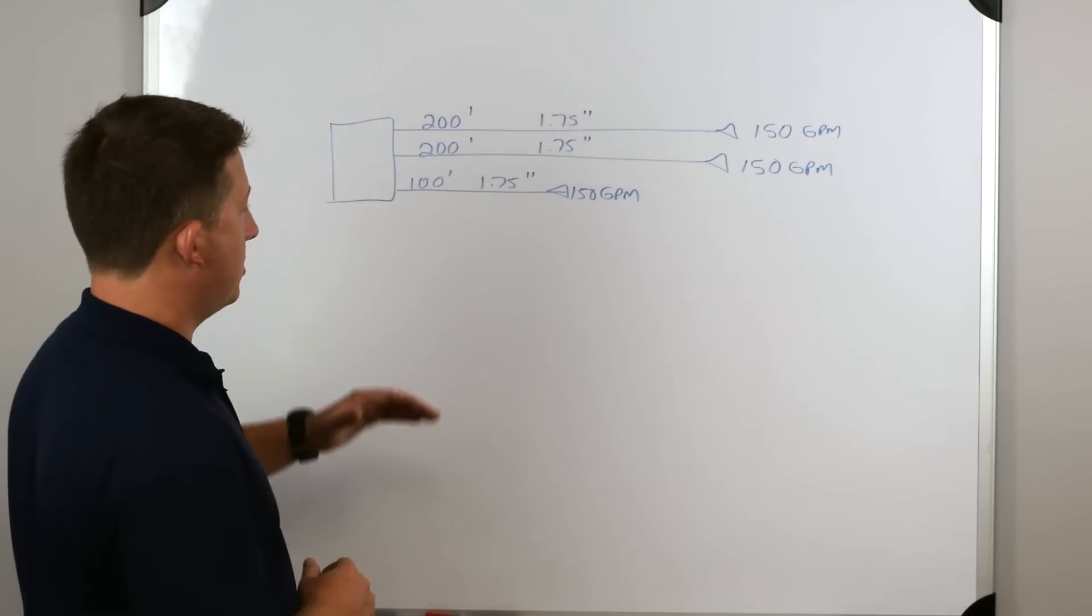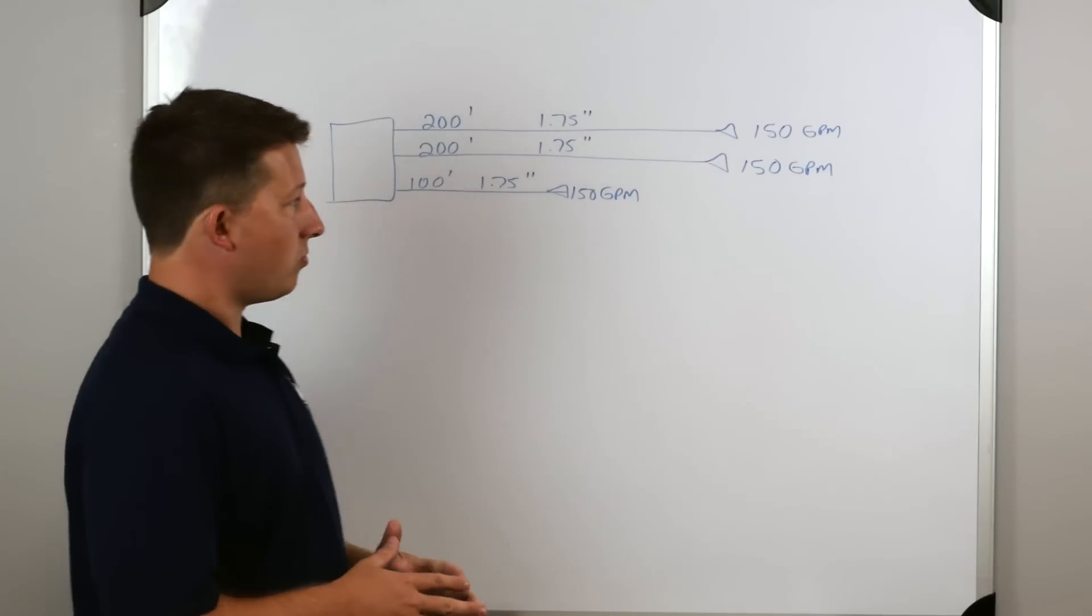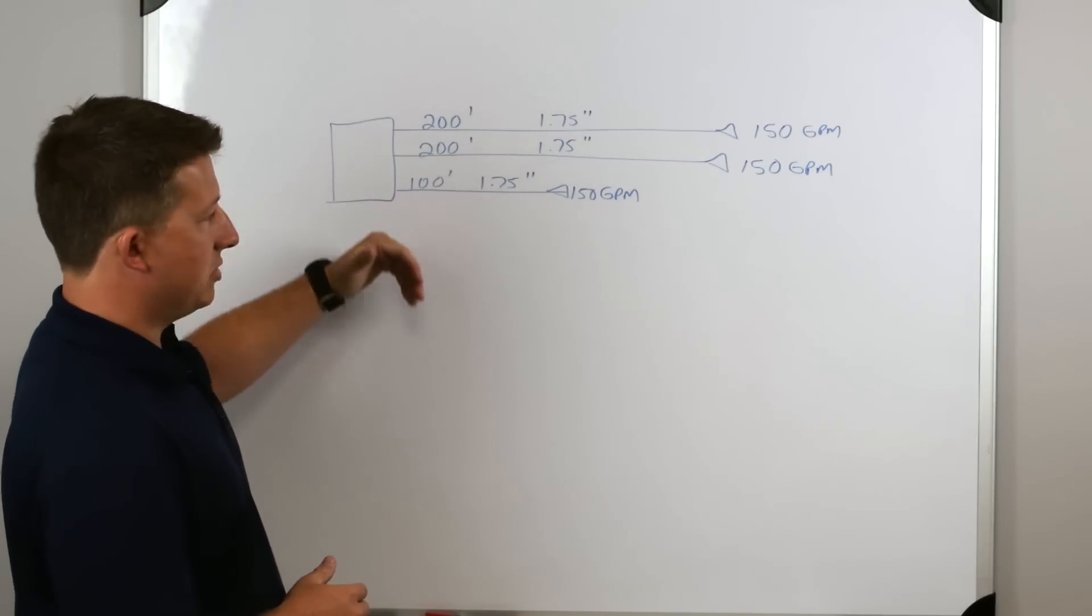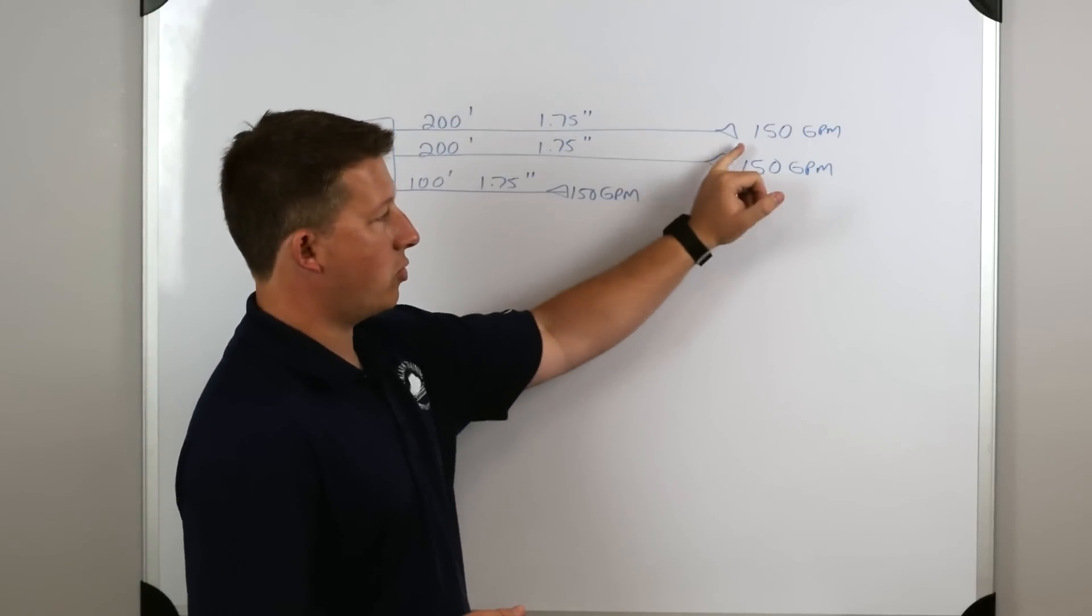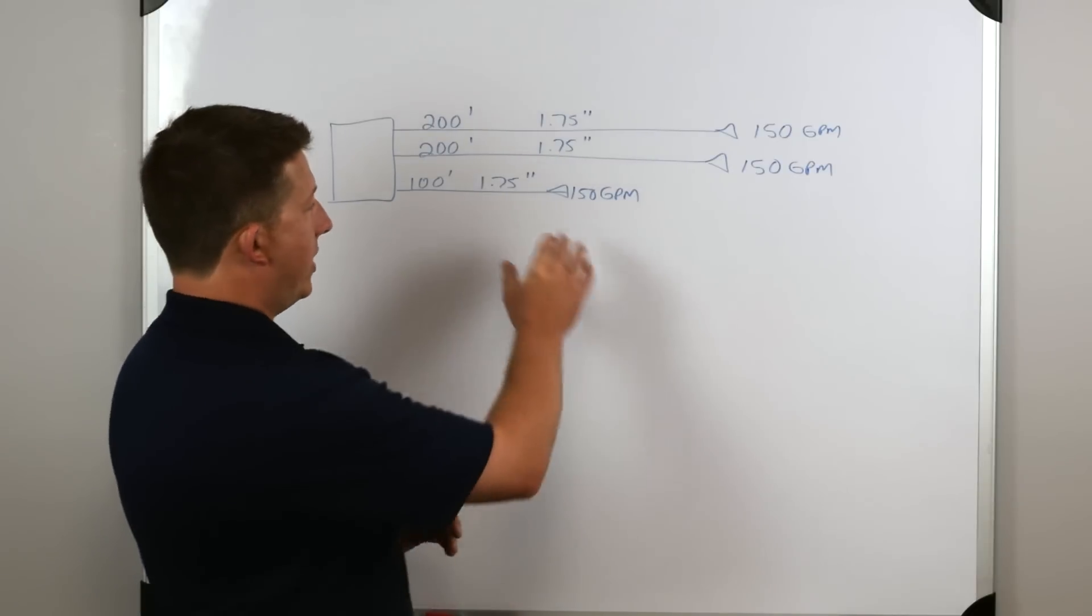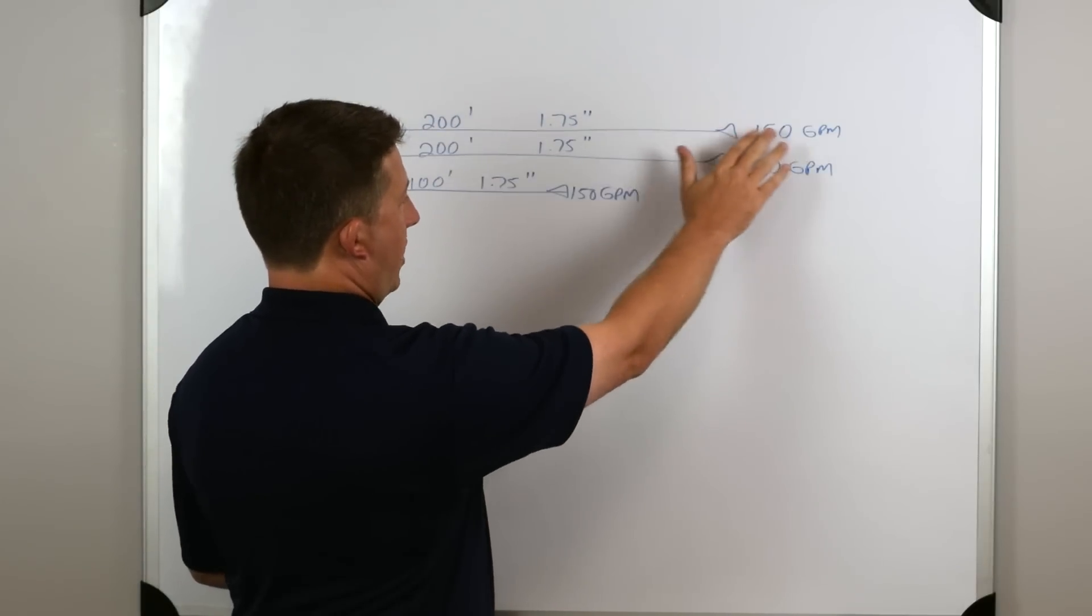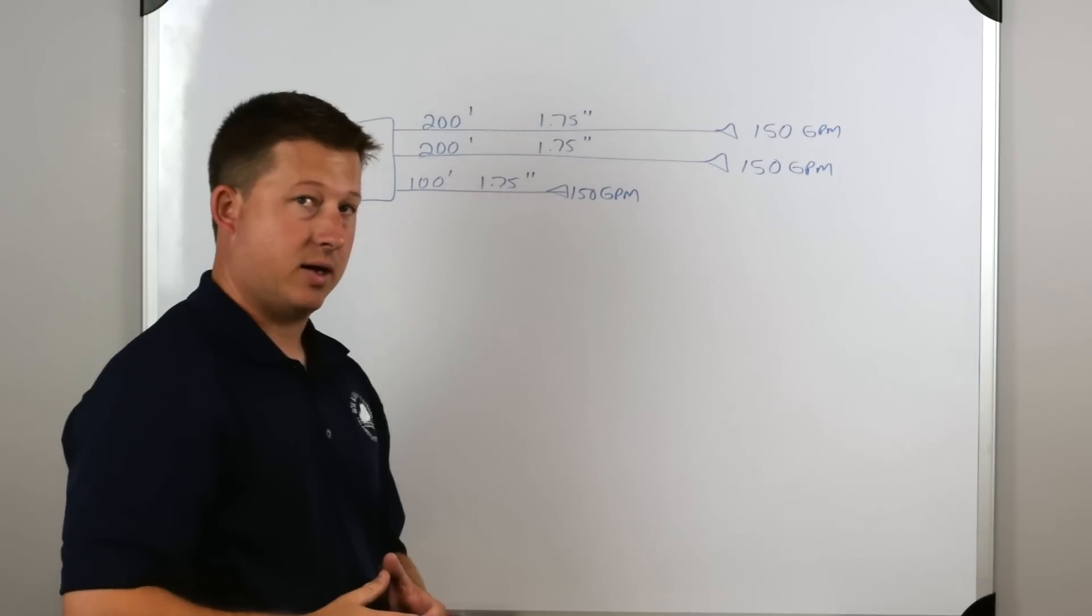The first concept that we're going to talk about is when we have multiple lines that are the same length. When we have two lines - I have three lines pulled off the truck right now, but we're going to say that these first two are 200 foot inch and three quarters, each flowing 150 gallons per minute. We would only calculate the pump discharge pressure for that one line.